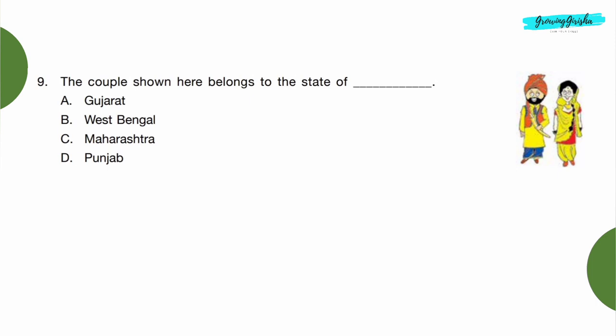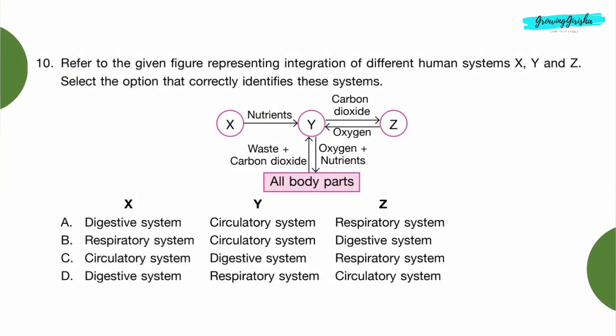Question 9: The couple shown here belongs to the state of? Option D: Punjab. Question 10: Refer to the given figure representing integration of different human systems X, Y, and Z. Select the option that correctly identifies these systems. Nutrients are found in digestive system, so the answer can be either Option A or D. Y provides oxygen and nutrients to all the body parts - it is circulatory system, which is in Option A and B, so Option A is the correct answer.